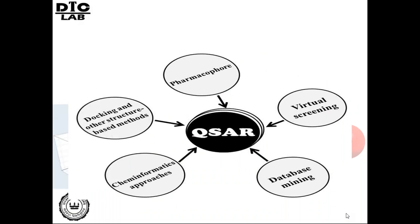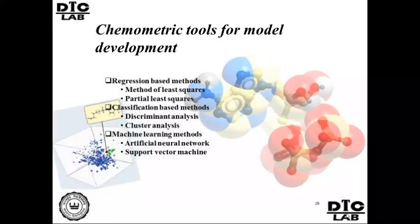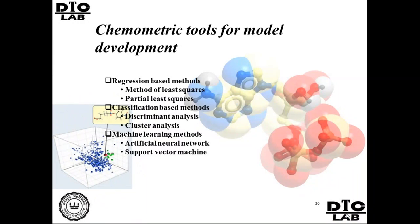QSAR, along with other modeling strategies like pharmacophore, data-based mining, read-across approaches, and structure-based approaches, can be used to develop drug candidates. In environmental chemistry, usually QSAR is used; other approaches like docking are not much used, but can be used in some cases provided the receptor structure is known. QSAR may be either regression-based or classification-based. In regression-based, we can use simple multiple linear regression or more robust partial least squares. For classification, one can use discriminant and cluster analysis. Machine learning can again be regression-based or classification-based, with examples like artificial neural network, support vector machine, random forest, and so on.